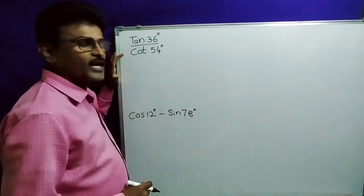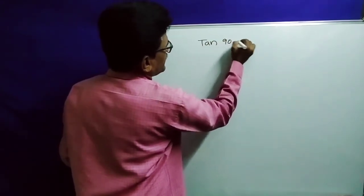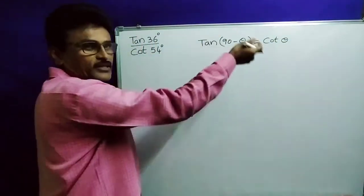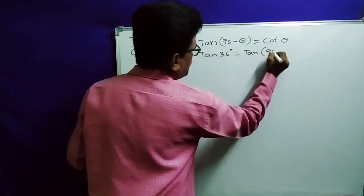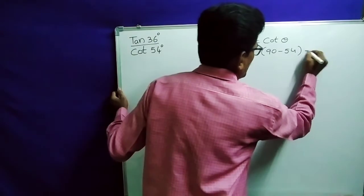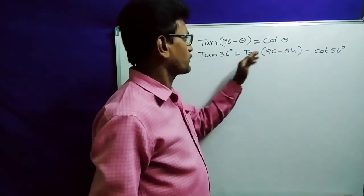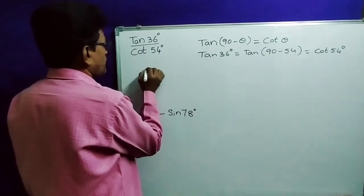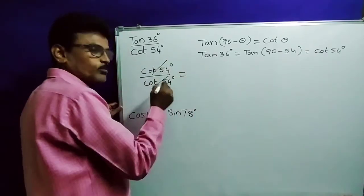We have to convert tan into cot, or cot into tan. We know that tan(90 minus theta) is cot theta — this is first quadrant. So tan 36 degrees I am writing as tan(90 minus 54). What is tan(90 minus 54)? It is cot 54. So tan 36 equals cot 54, and the denominator is also cot 54 degrees, so both will cancel and we get the answer 1.